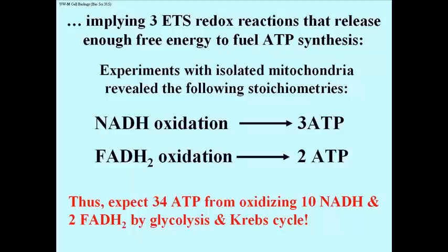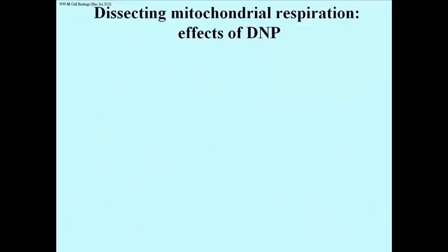How is the exergonic electron transport system pathway actually linked to ATP synthesis, to oxidative phosphorylation? The first clues came from the effects of a respiratory poison called dinitrophenol or DNP.